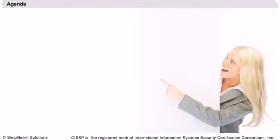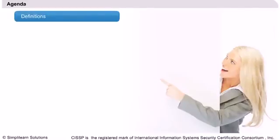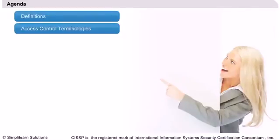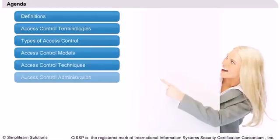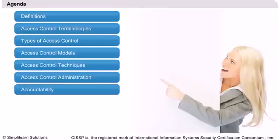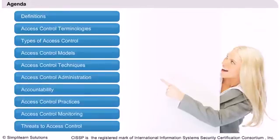Before drilling down more on the concepts and methodologies of access control, I will first briefly list out the topics to be covered in this lesson. We will begin with the overview and definition of access control and the relevant terms associated with it. Then we will understand the various types of access control, models, techniques, administration, methods, accountability, and practices. Finally, we will study the major threats to access control and countermeasures. At the end of this lesson, you will be able to meet all the objectives set by ISC2 for this domain.